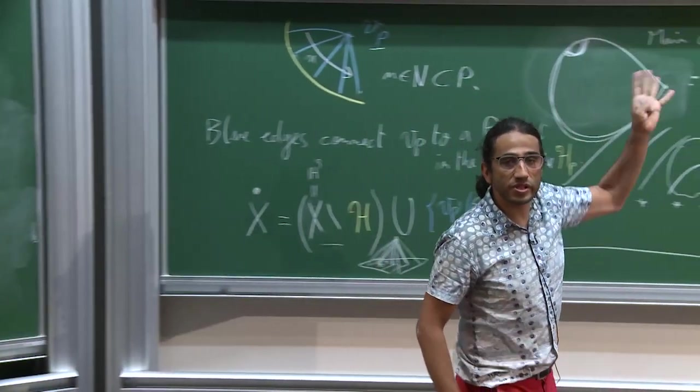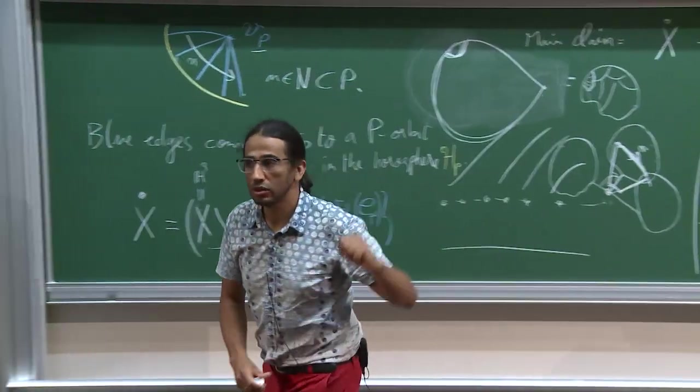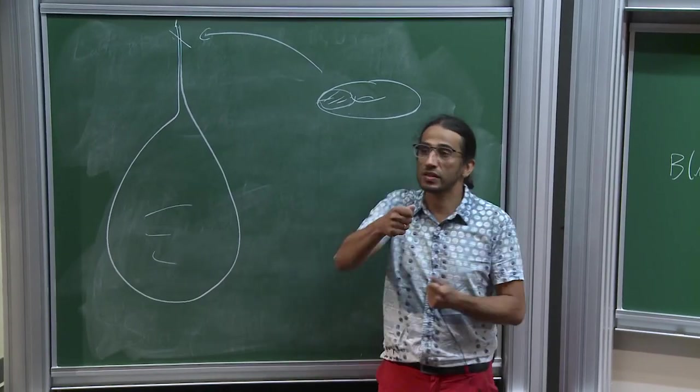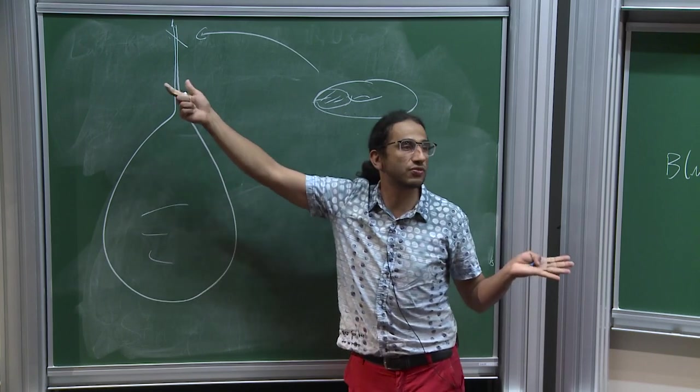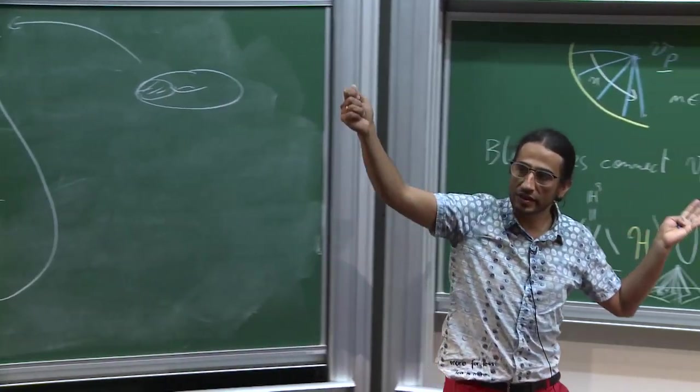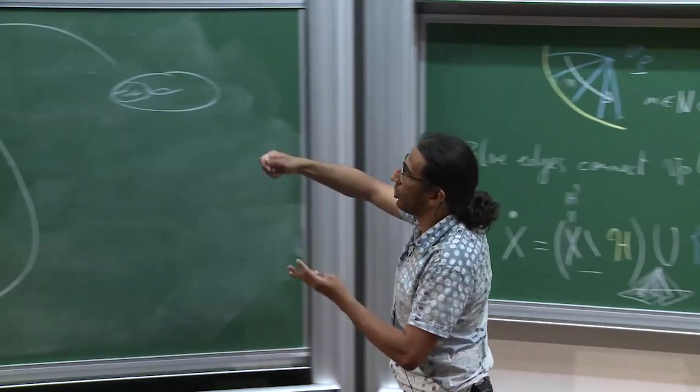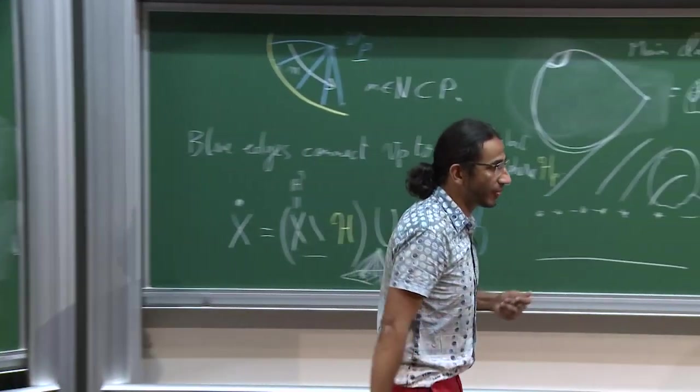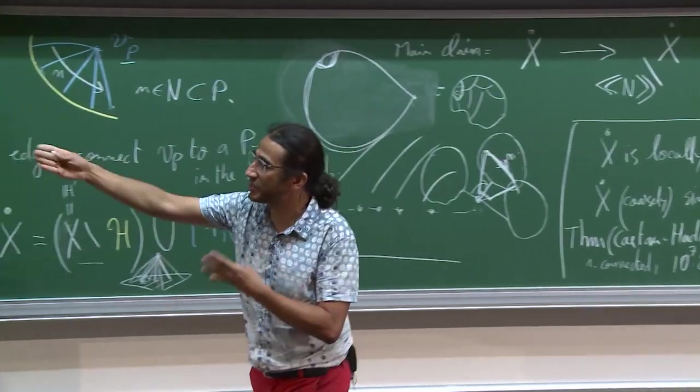But if you go far enough in the cusp, you find a moment where the length of this slope is just like a macroscopic quantity. And that's where you cut and you glue. That's what morally happens in this setting.